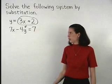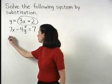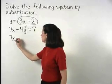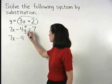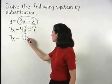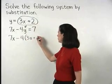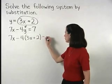Rewriting our second equation, we now have 7x minus 4 times parentheses 3x plus 2 equals 7.